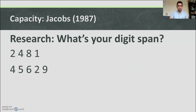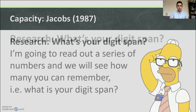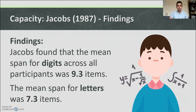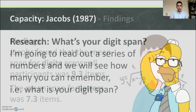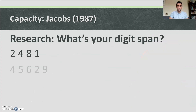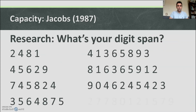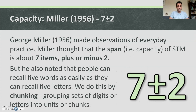According to Jacobs' research, most people could remember around 9.3 items if digits — how did you do? Did you do more than nine or less than nine? If it was letters, around 7.3 items. And that's related to capacity.